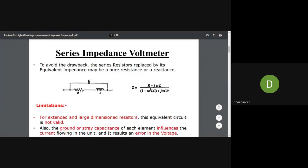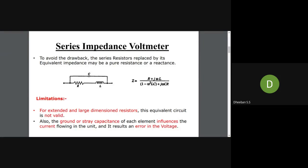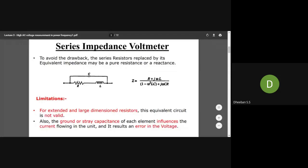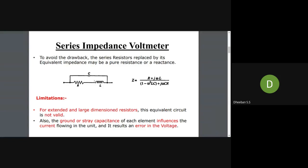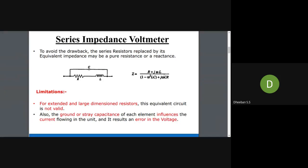In the series impedance voltmeter, the series resistance is replaced by its equivalent impedance, which can consist of a capacitor as well as a resistor. In DC voltage measurement we used resistance alone, but in the series impedance voltmeter the resistance is replaced with energy storage elements like a capacitor and inductance. Using a Laplace transform, the equation comes out as a second-order system.